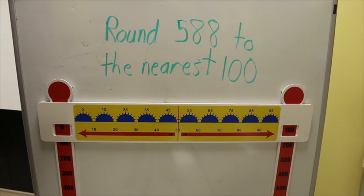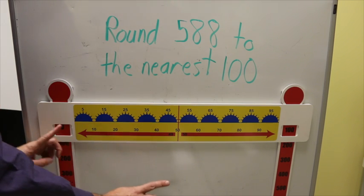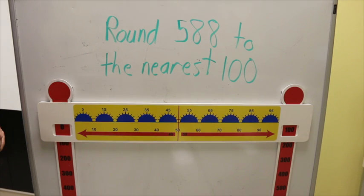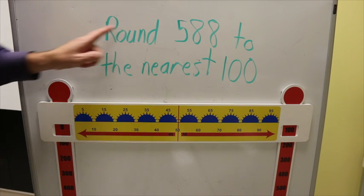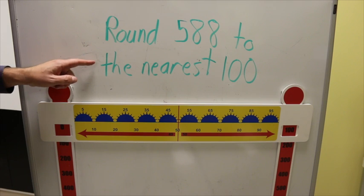But one of the most common ways for students to determine how to round their numbers is the proximity of their fingers to the windows on the left or the right. The first math problem that we're going to do is round 588 to the nearest hundred.